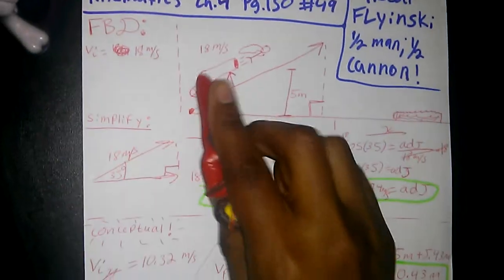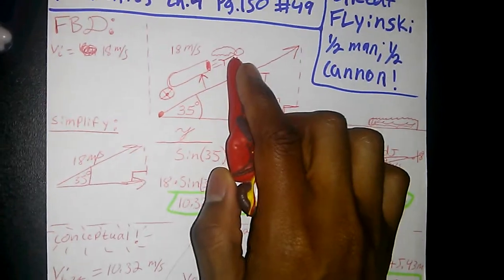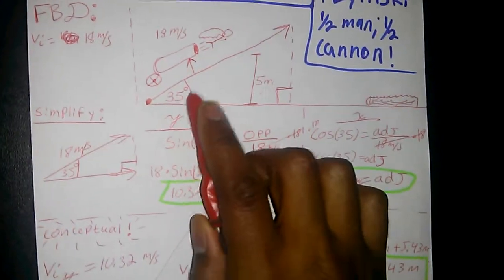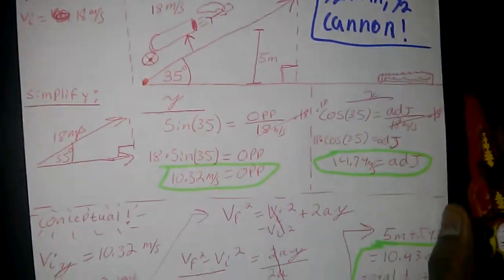Now, Mewtwo blasted him out the cannon with his psychic powers. Great Flyinski at 18 meters per second, angle of 35, and up 5 meters.